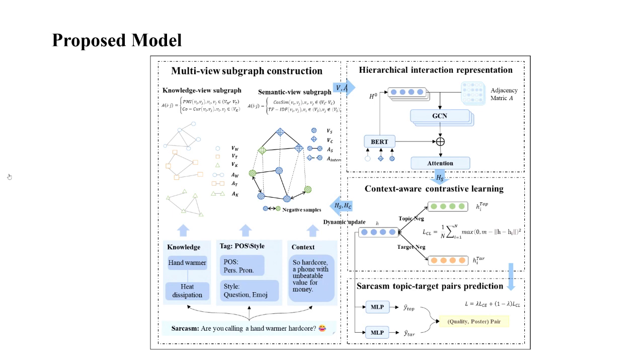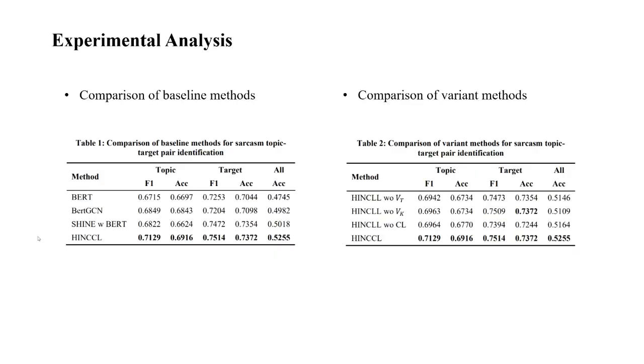Finally, label propagation and contrastive nodes are jointly optimized to predict the sarcasm topic-target pairs. On the constructed digital dataset, we compare our method with baselines and variant methods. Experimental results demonstrate the efficiency of our method.